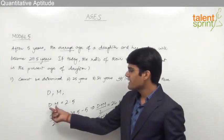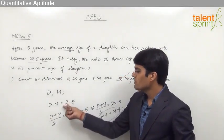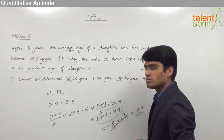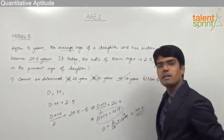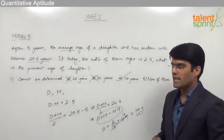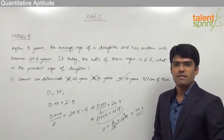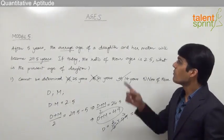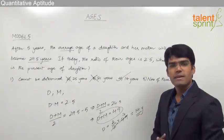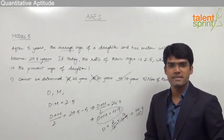One more point: since the present ages are in the ratio 2 to 5, the present age of daughter should be a multiple of 2. Option 2 is not a multiple of 2, and option 3 is not a multiple of 2 either, so the answer can be either option 4 or option 5. With the second condition we can verify that option 4 is the correct answer. Most questions from ages can be solved simply by eliminating the options. That's all from ages — see you in the next session, thank you.